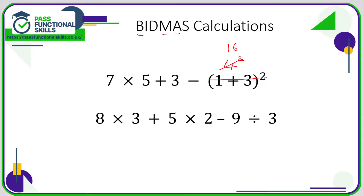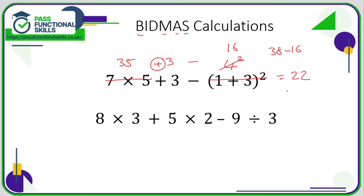The question is now seven times five, plus three, minus 16. We have multiplying, adding, and subtracting, so we need to do the multiplying first — seven fives are 35. The question is now 35 plus three minus 16. We do the adding before the taking away: 35 plus three is 38, then we take away 16, giving us 22.